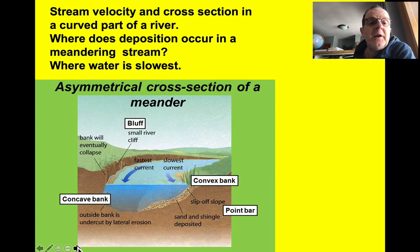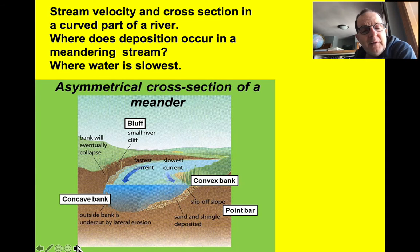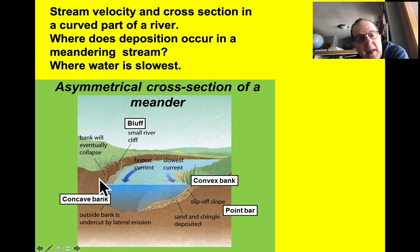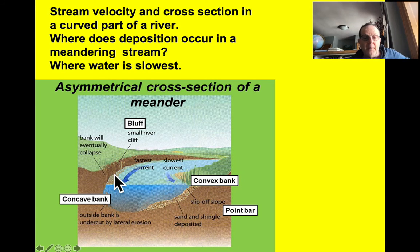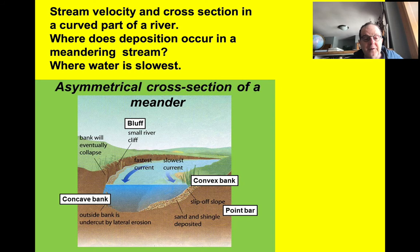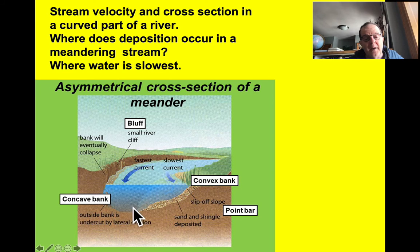Stream velocity and cross section in a curved part of a river: where does deposition occur in a meandering stream? Where the water is slowest — that's obvious. Here we have a bank that might collapse because the current is fast. Here we have a point bar because the current is slow. Here there's some deposition on the bottom because the current is slow, and here the bank is cut out. This cross section is very characteristic of a meandering stream: one side cut away where the water moves fast, and one side flattened and depositional where the water moves slow.